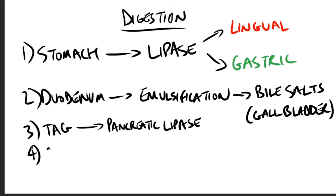Number four is colipase is also secreted by the pancreas, which restores activity to the lipase. Now colipase is secreted as a zymogen, which is procolipase, activated by trypsin.